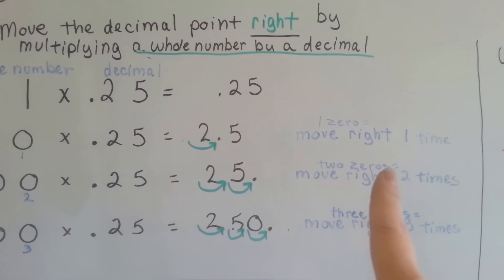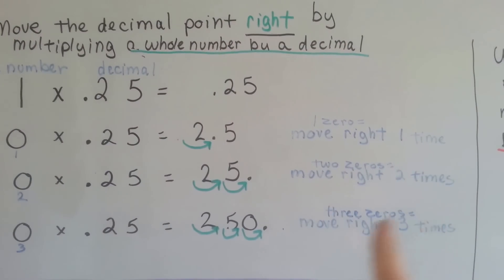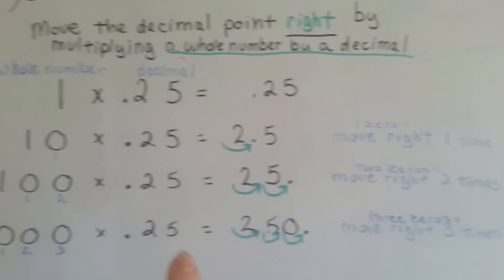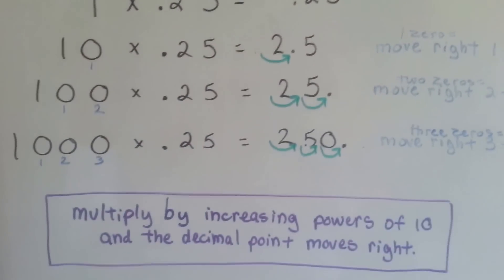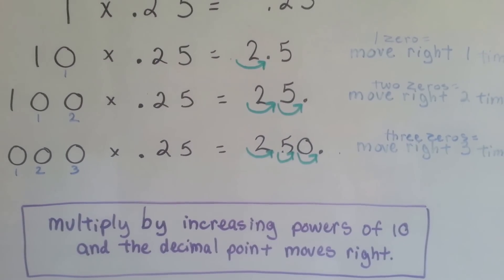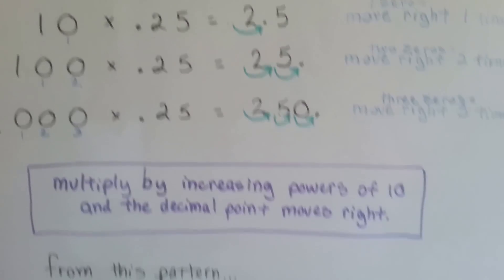One zero — move it right one time. Two zeros — move it right two times. Three zeros — move it right three times. That's for powers of ten. You multiply by increasing powers of ten and the decimal point moves right.